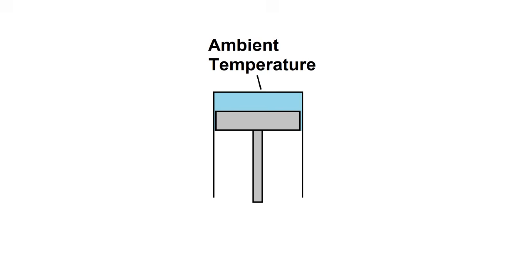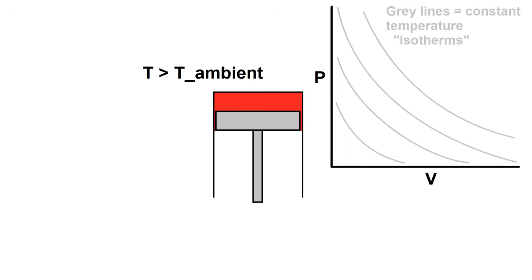For starters, let's imagine a piston in a cylinder where everything is at ambient temperature. Now suppose the piston compresses the air inside the cylinder. When the air is compressed, it heats up. Let's look at this on a pressure versus volume graph. We start at point one, and those gray lines are lines of constant temperature, or isotherms.